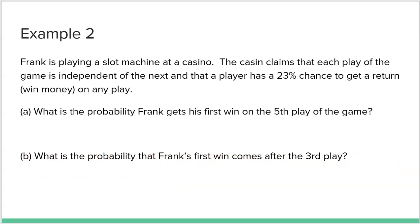Let's completely change the scenario. Frank is playing a slot machine at a casino. The casino claims each play is independent of the next, and that a player has a 23% chance to get a return on any play — maybe the jackpot, maybe only 50 cents. You either win or lose at the end of each spin. Two questions: what is the probability Frank gets his first win on the fifth play, and what is the probability his first win comes after the third play?